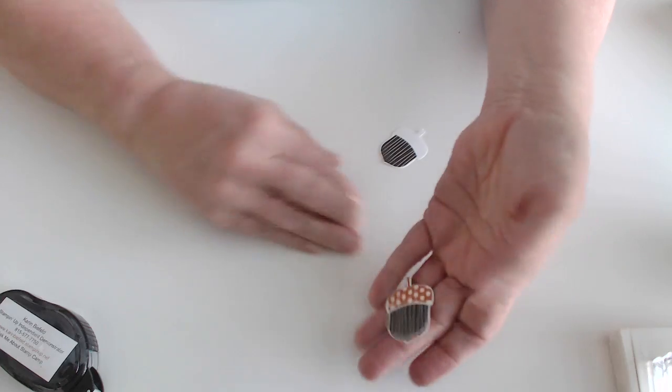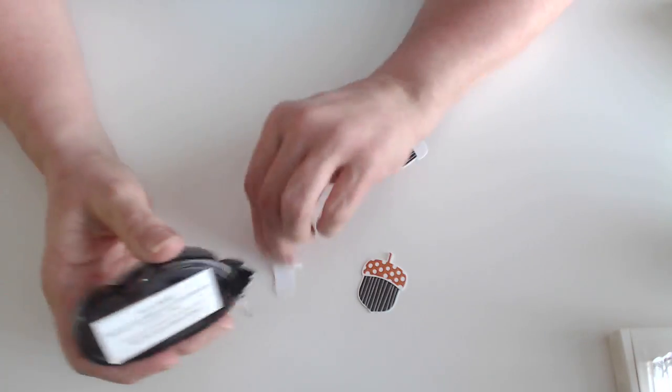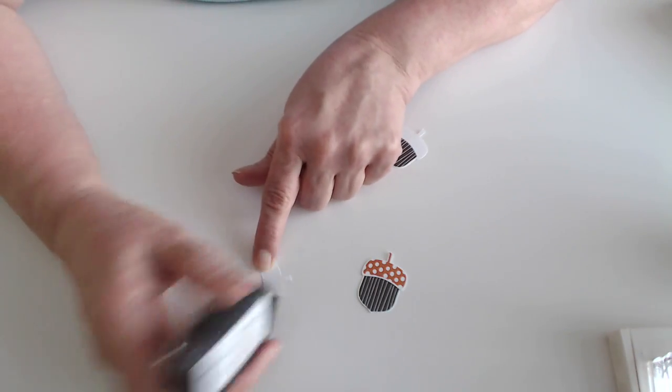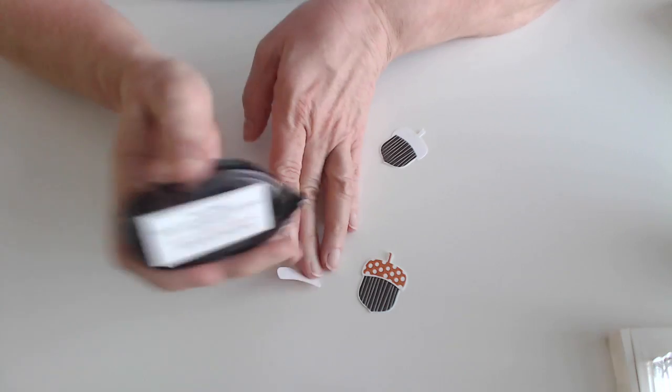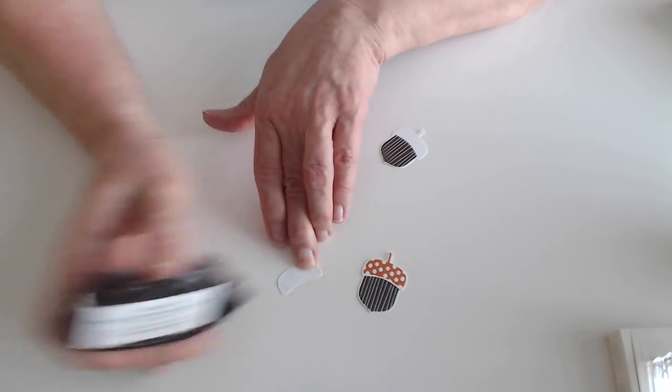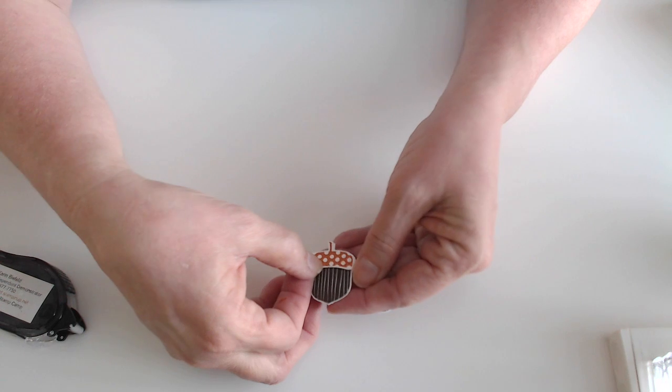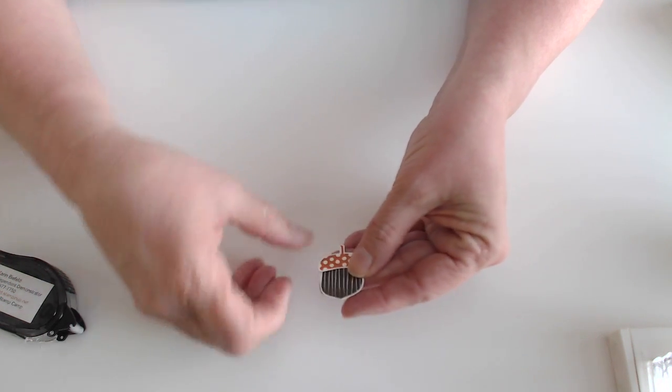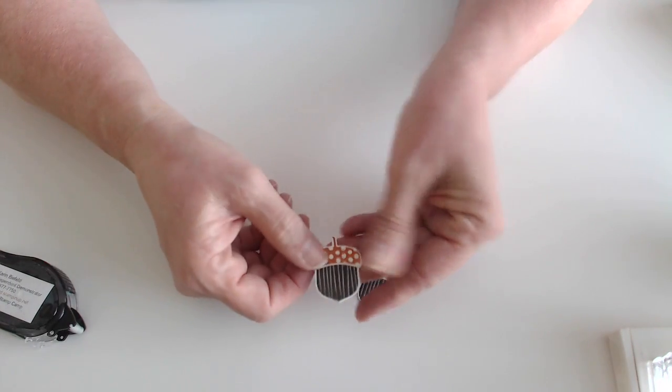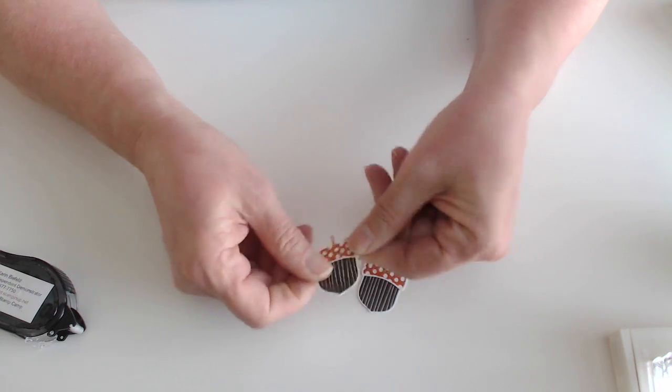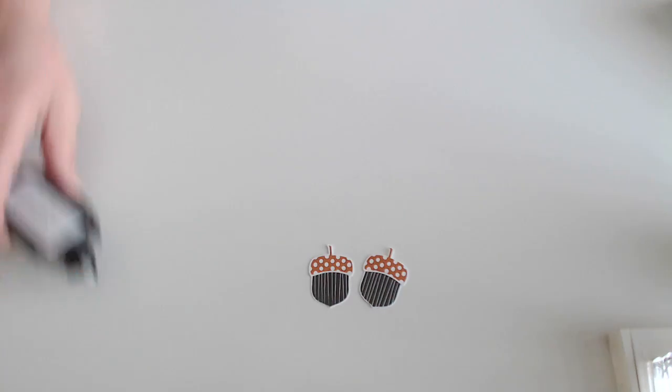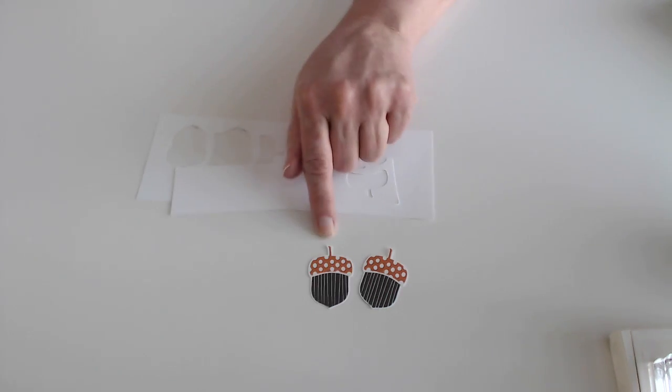I'll do the other one again just in case. Snail, line up the top, and attach. So you can see by cutting your strips of paper into a manageable size how nice those turn out. And I hope that helps for the girl that had asked about punching out stamped images.